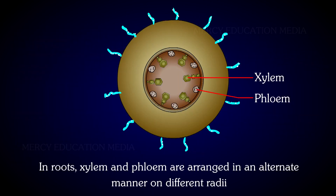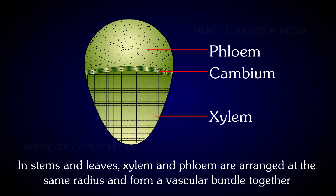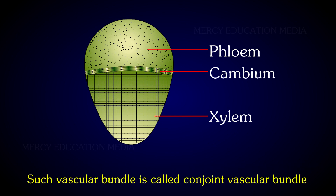In roots, xylem and phloem are arranged in an alternate manner on different radii; this is called radial arrangement. In stems and leaves, xylem and phloem are arranged at the same radius and form a vascular bundle together; such a vascular bundle is called a conjoint vascular bundle.